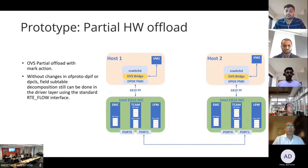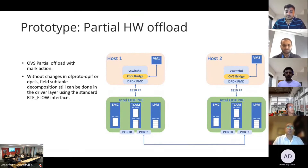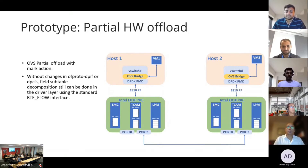So why do we do this partial hardware offload? Because when we offload this algorithm in hardware, the number of packets reaching the slow path would be less. This slide shows the setup that we use to verify this algorithm. We have two Intel E810 NICs connected to two different hosts back to back. We have the OVS software running on both hosts, which are connected to VMs, and we have the modified driver in this OVS and DPDK. In this topology, we have not changed anything in the OFPROTO DPIF layer or the DPCLS layer. The field sub-table decomposition is done in the driver layer using the standard RTE flow interface.